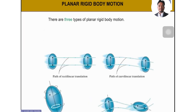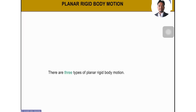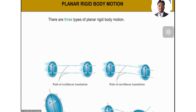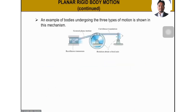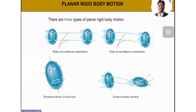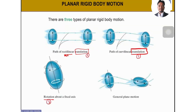There are three types of rigid body motions. We have translation — which includes rectilinear and curvilinear translation — then we have rotation, and then we have general plane motion.